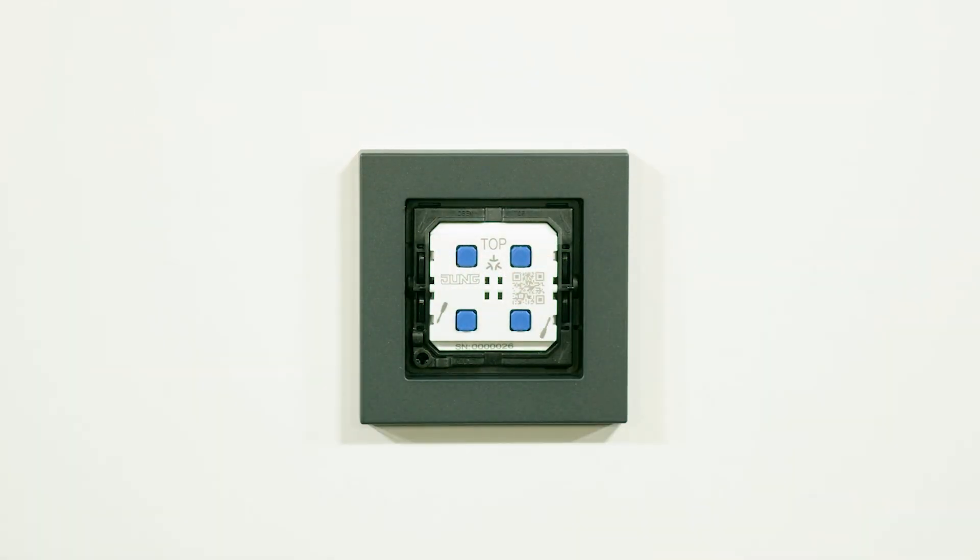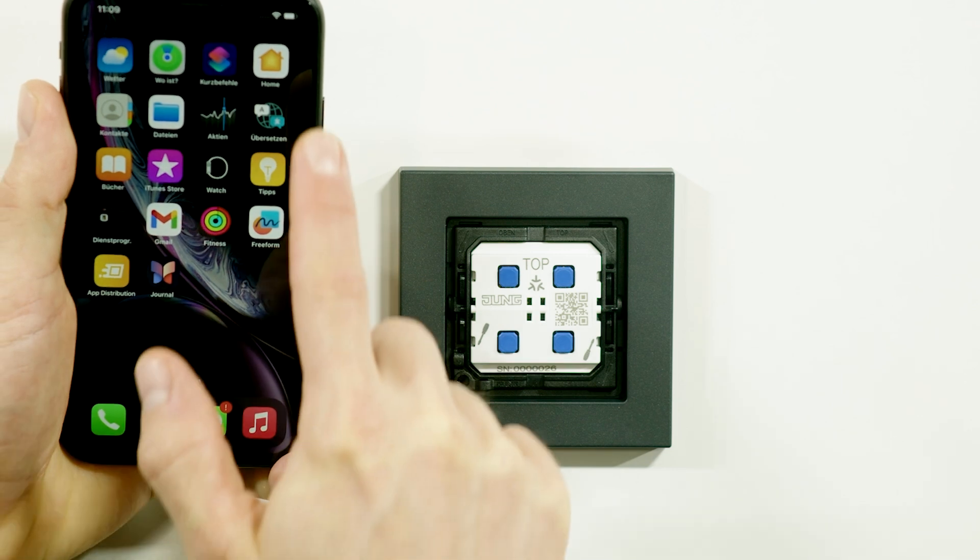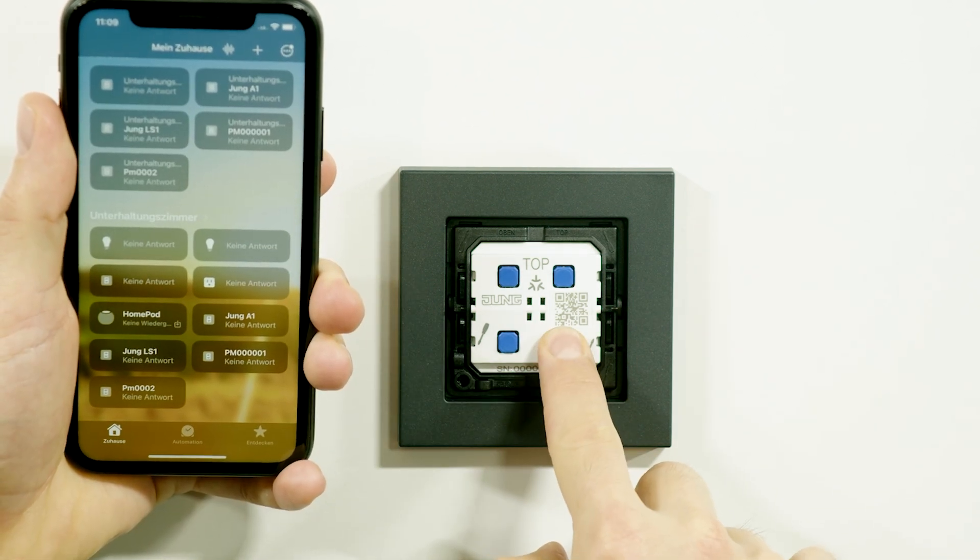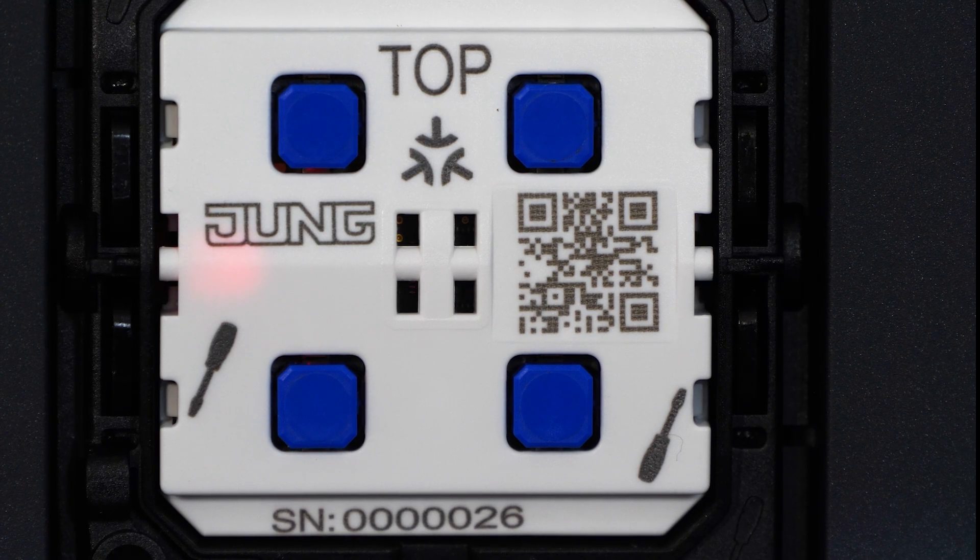To add the META push button to your smart home system, proceed as follows. Open the app of the respective provider on your end device. Press any of the four buttons on the radio module for longer than two seconds until the status LED flashes red.